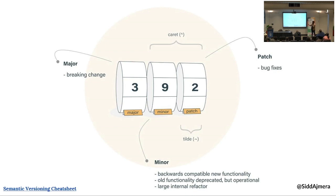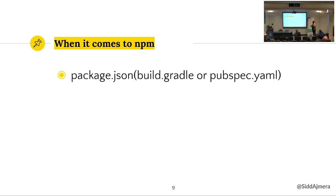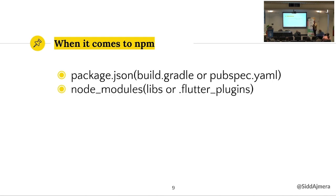So a version follows the pattern major.minor.patch. When it comes to NPM, the package.json file tells us what dependencies our code depends on. If you're from a Kotlin background, think of this as the build.gradle file; from a Flutter background, it's your pubspec.yaml file. The node_modules folder is where all third-party JavaScript library dependencies get installed — similar to the .flutter_plugins folder in Flutter or the libs folder in Android/Kotlin.